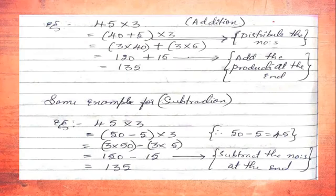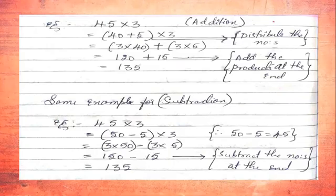In place of 45 we write (50 − 5) × 3. Now we multiply first 3 × 50, keeping the minus symbol as it is, then 3 × 5. So: 3 × 50 = 150, minus symbol as it is, then 3 × 5 = 15.